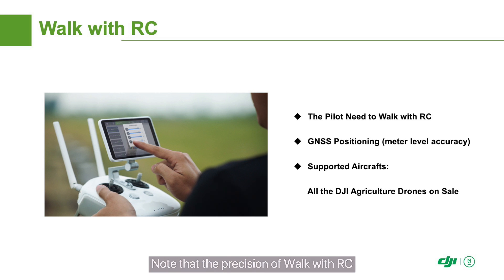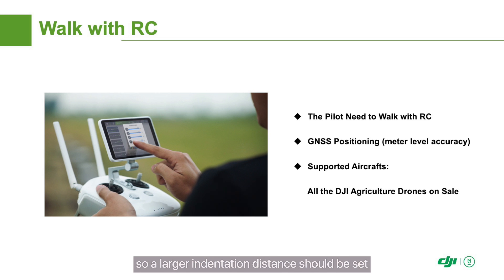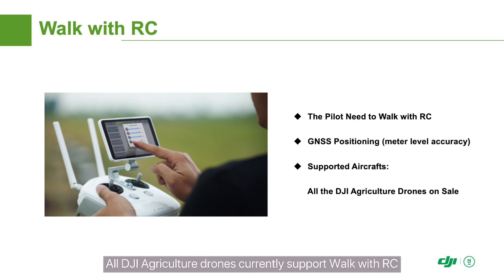Note that the precision of Walk with RC relies on ordinary satellite positioning, so a larger indentation distance should be set when editing the route. All DJI Agriculture drones currently support Walk with RC, which is the most basic planning method.